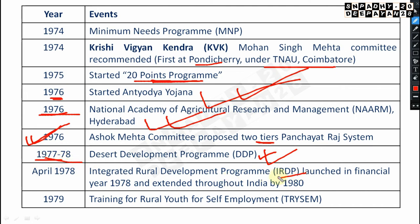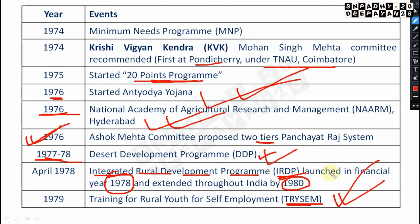The Integrated Rural Development Program (IRDP) was launched in financial year 1978 and extended throughout India by 1980. TRYSEM — Training for Rural Youth for Self-Employment — is also very very important, started in 1979.